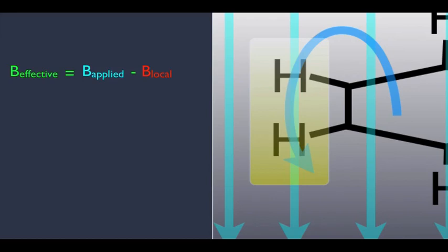Here is our B effective equals B applied minus B local. Now remember, this right here, this B field, is created by the electrons that are moving through the benzene ring and circulating like this. And remember, we also have the B field that the NMR machine is creating. So notice, in this yellow box right here, you've got two B fields going on. And notice their direction.